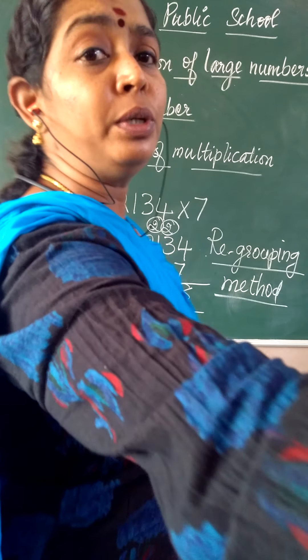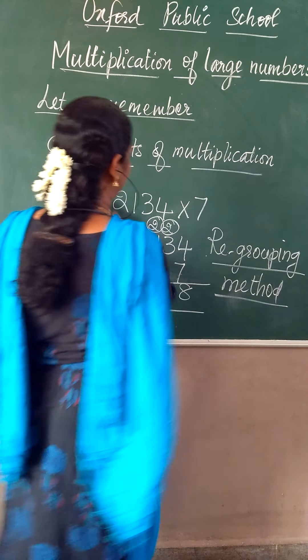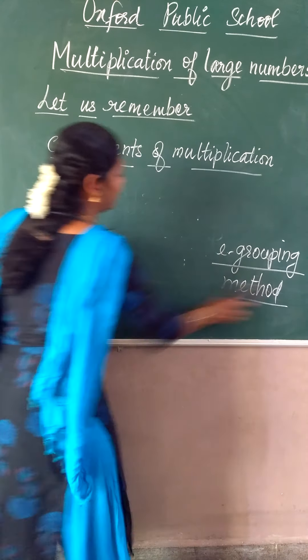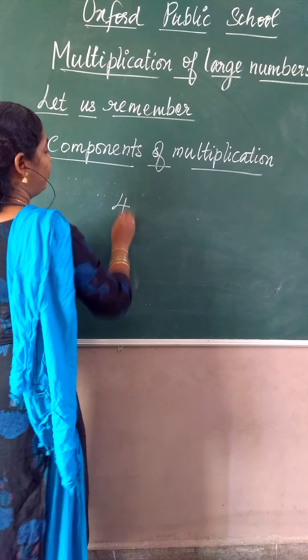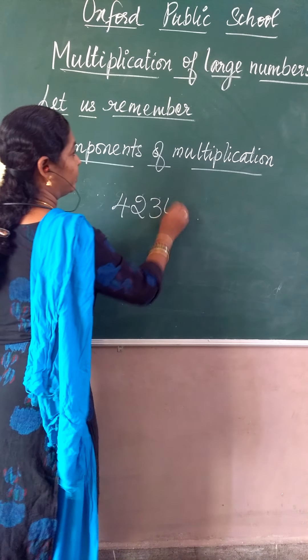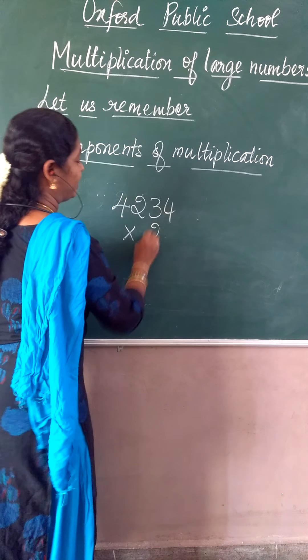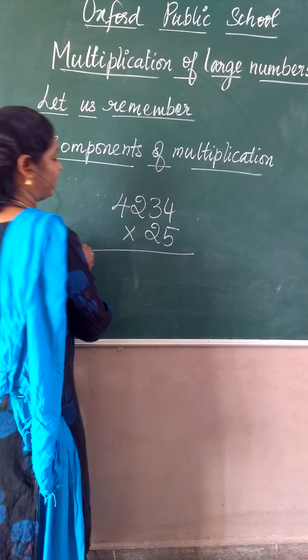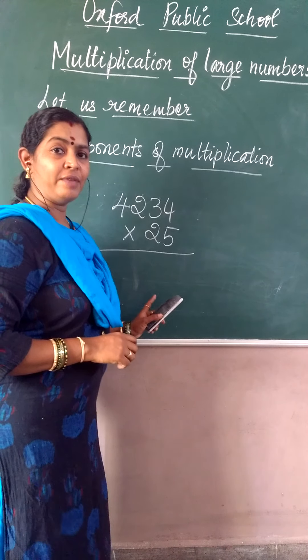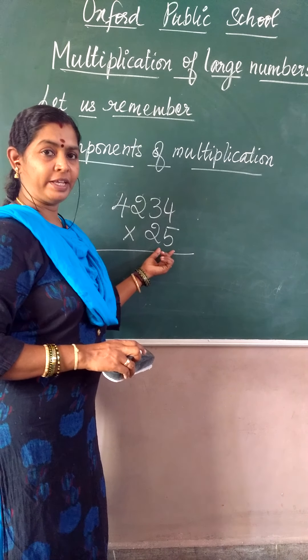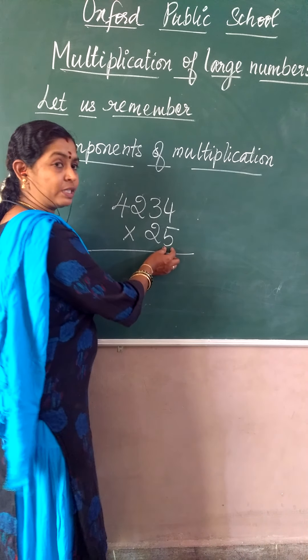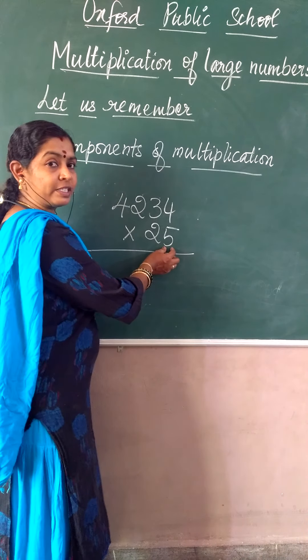Let us go with 2-digit number multiplication. Suppose 4,234 multiplied by 25. How are we going to do it? The same way as we did for 1-digit multiplier. First we will take the ones place digit and multiply, then we will use the tens place value and again go for 1-digit multiplier.